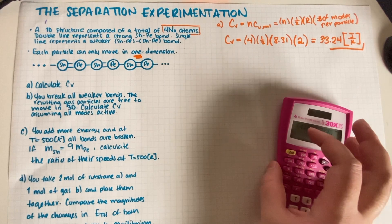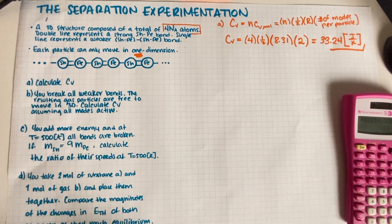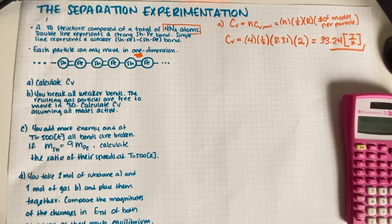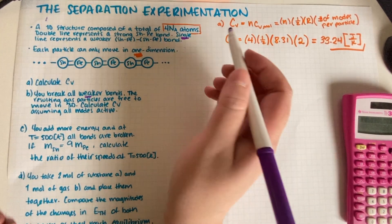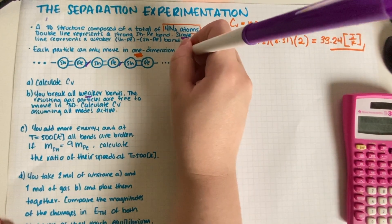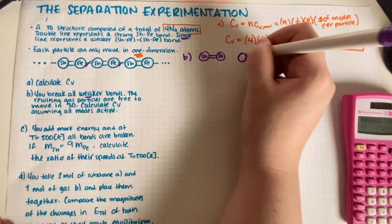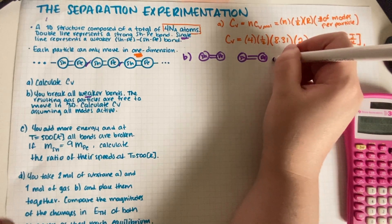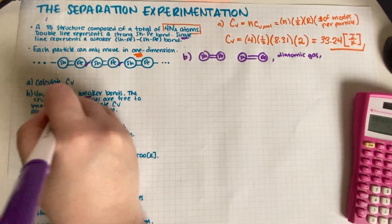Okay, so now moving on to Part B. For Part B, you break all the weaker bonds. The resulting gas particles are free to move in three dimensions. Calculate C_v assuming all modes are active. Okay, so we have to do the same but now for a diatomic gas. How do I know this is a diatomic gas? Well, the problem says we're gonna break just the weaker bonds, and the weaker bonds are the single line. So for Part B we're gonna have basically a bunch of diatomic atoms just moving around. This is a diatomic gas, and the problem says assume all modes are active.